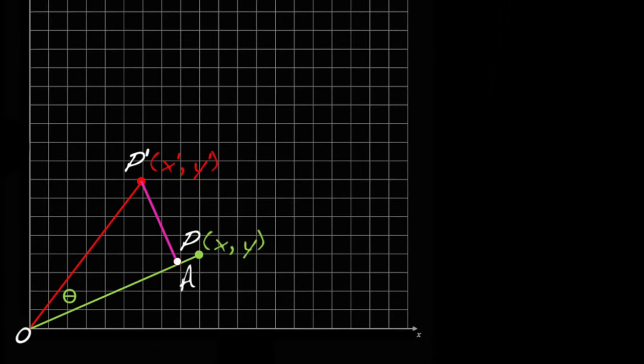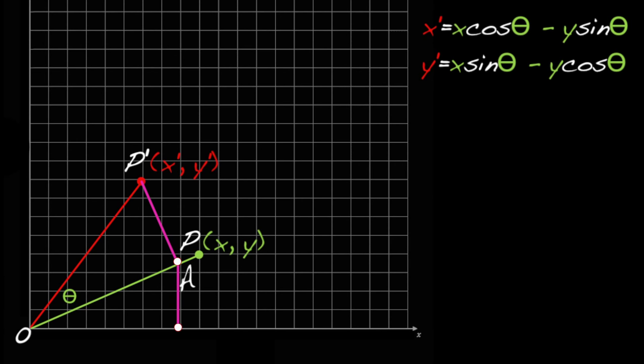Now let's reverse the rotation and drop a perpendicular from A to the x-axis to define a point B. Similarly, drop a perpendicular from P prime to get point C. Observe that the x-coordinate of A, line OB, is greater than the x-coordinate of P prime, line OC. So we must subtract a certain amount.